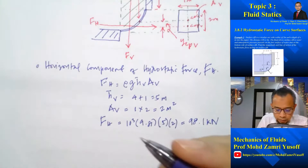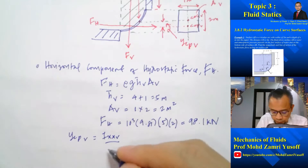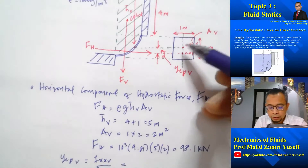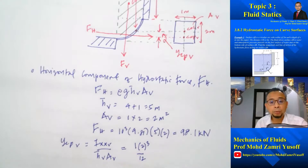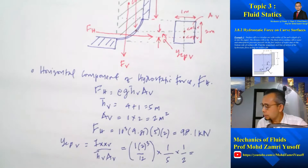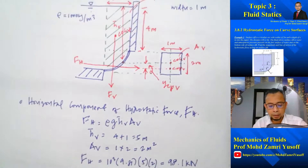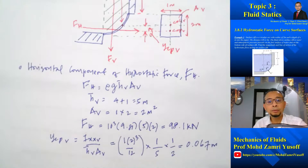Next, the line of action. Y_CP vertical = I_XX vertical / (H̄_vertical · A_vertical). The second moment of area for a rectangle is (1 × 2³)/12. Multiplying by 1 over (5 × 2) gives Y_CP vertical = 0.067 meters. So the magnitude of the horizontal component is 98.1 kN and its line of action offset is Y_CP = 0.067 meters.